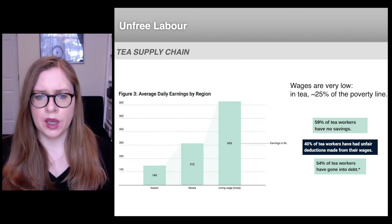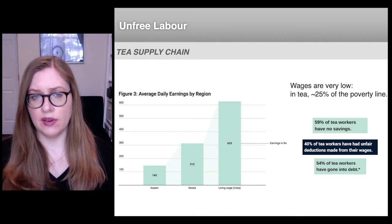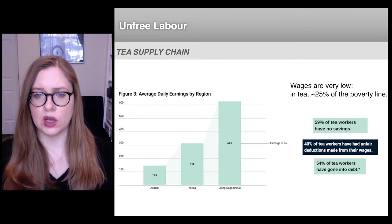We also found that wages were extremely low. Our research found that in spite of working full-time, tea workers are taking home on average less than 25% of the poverty line. 54% of the workers we interviewed had gone into debt, and 59% had no savings.